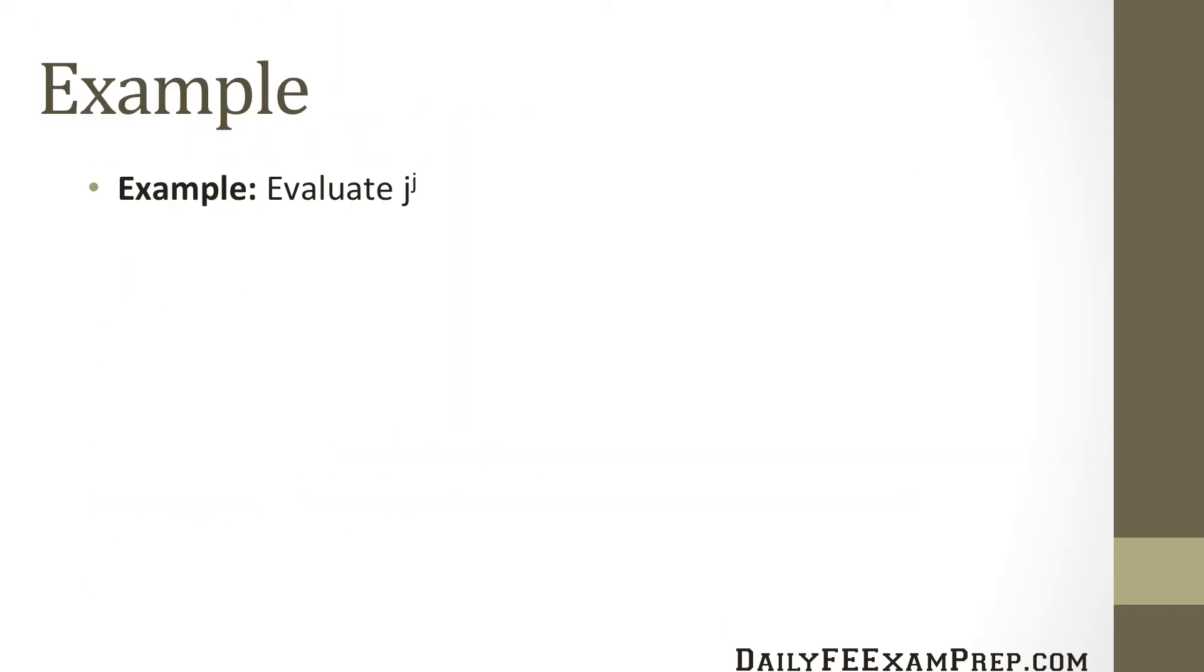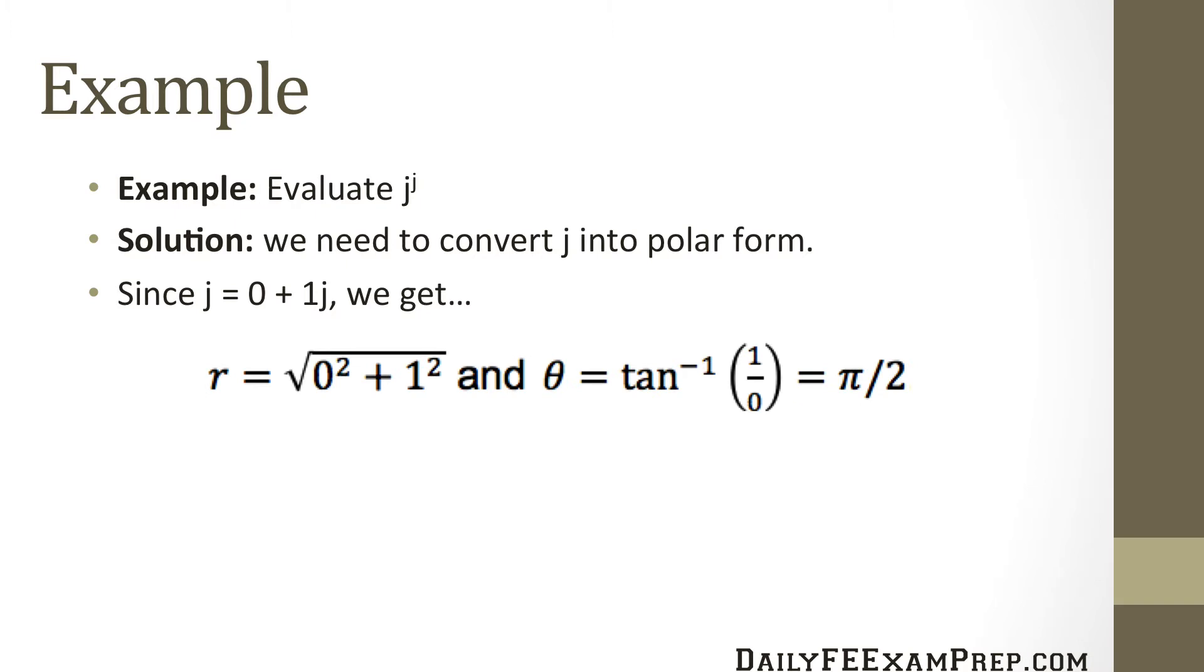So let's do that as an example. The example is evaluate j raised to the j. We first need to convert j into polar form. Since j equals 0 plus 1j, we get r equals the square root of 0 squared plus 1 squared, and theta equals the inverse tangent of 1 divided by 0, which equals pi over 2. Now in polar form, we have j equals 1 times the cosine of pi over 2 plus j sine pi over 2, and that equals 1 times e raised to the j times pi over 2.